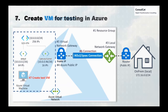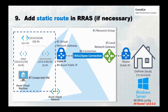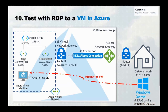Step seven, we will create a VM in Microsoft Azure that we're going to use later on to test our VPN connection. Step number eight, we will configure routing and remote access on a Windows server — from 2012 all the way up to 2019 — for the VPN itself. Then step number nine, we will add the static route needed to send the traffic from the on-premise network all the way up to the Microsoft Azure 10.0.0.0 address space, as you can see on the screen. And finally, step number ten, we will test our VPN with an RDP connection from on-prem to our VM in Microsoft Azure.